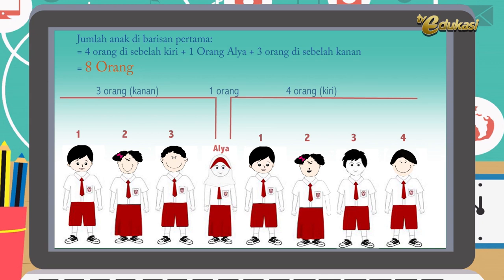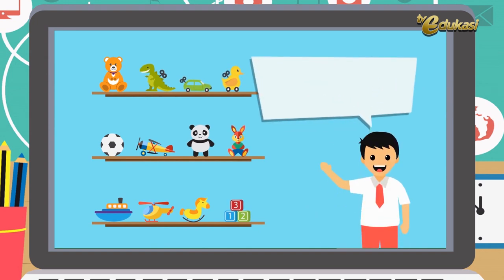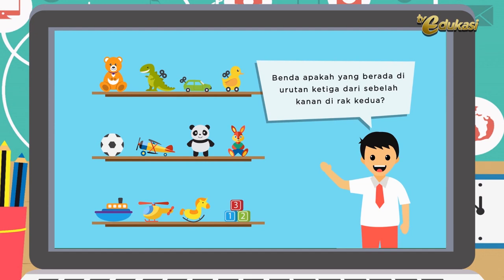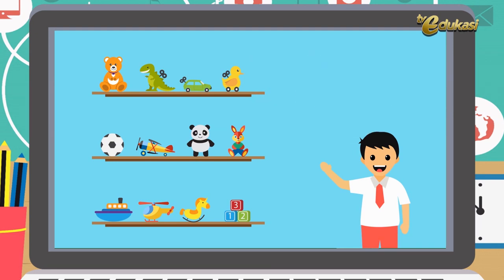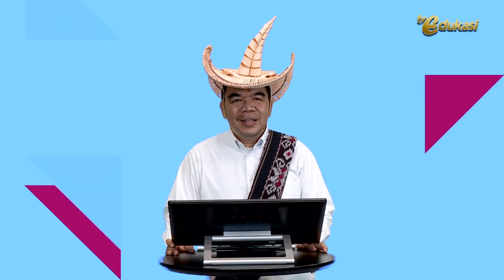Jelas ya anak-anak, mudah kan? Ingat, jumlah yang baris jadi 8 orang. Bisa juga nanti kalian buat dengan gambar. Anak-anak, kalau kita lihat soal yang tadi Bapak berikan di awal, berarti kalian tahu dong, di rak kedua yang urutan ketiga dari sebelah kanan jawabannya apa? Betul, pesawat! Oke anak-anak, mudah kan, pelajaran mengurutkan bilangan. Ingat, belajar matematika bersama Pak Ridwan membuat matematika menjadi lebih mudah.